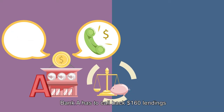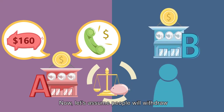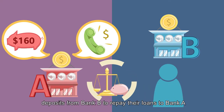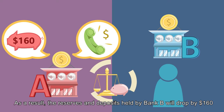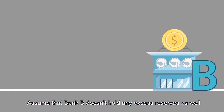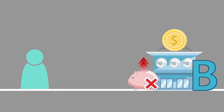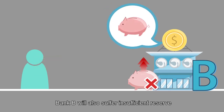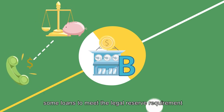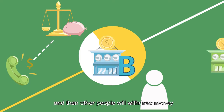In order to fulfill the legal requirement, Bank A has to call back $160 in lendings to meet the legal requirement on reserves. Let's assume people will withdraw deposits from Bank B to repay their loans to Bank A. As a result, the reserves and deposits held by Bank B will drop by $160. Assuming that Bank B doesn't hold any excess reserves, Bank B will also suffer insufficient reserves when people withdraw their deposits.